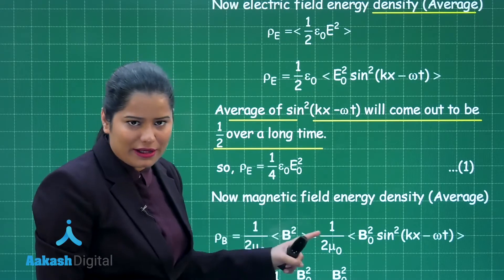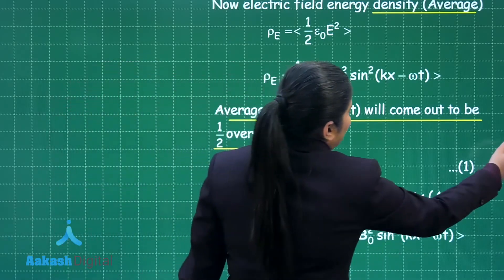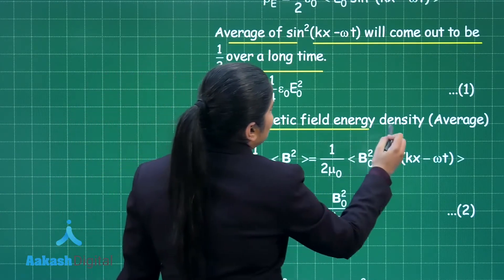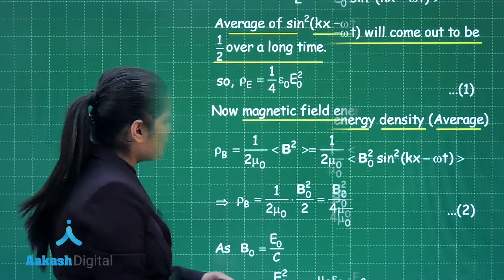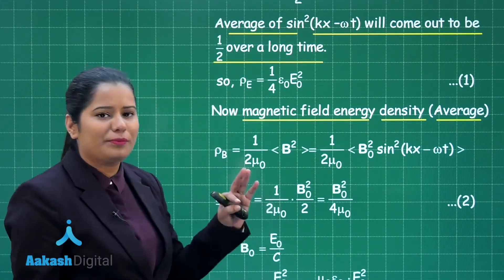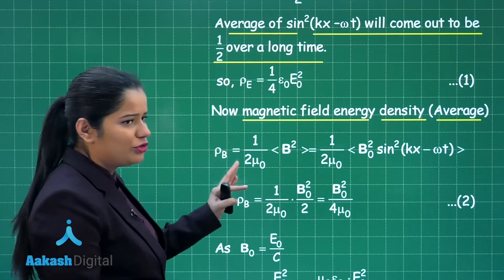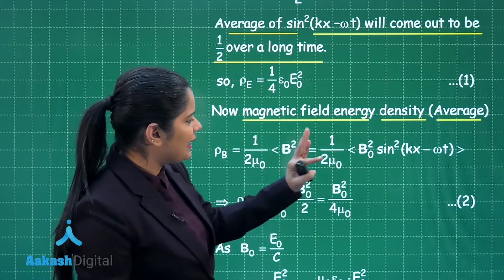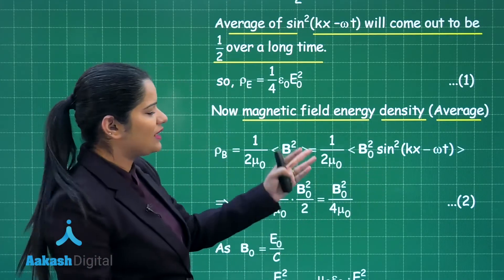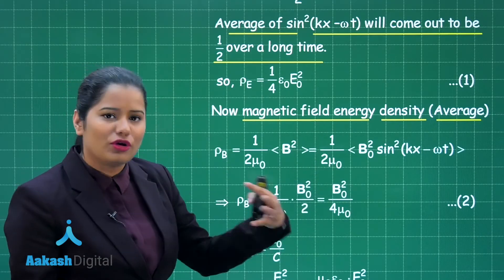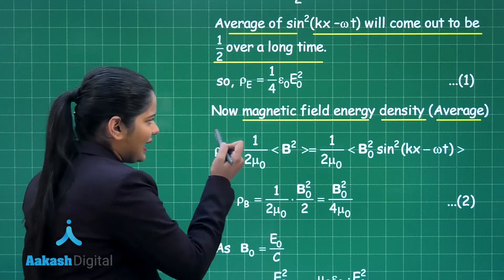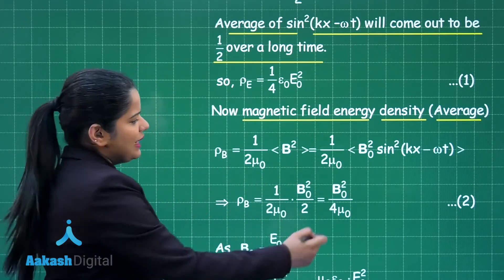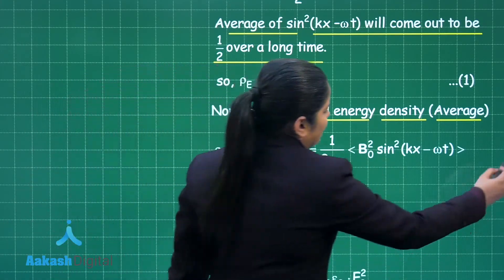Similarly, for the magnetic field, the average energy density is given by 1 over 2 mu-naught times the average of B-squared. Substituting the value of B and taking the average of sine squared (kx minus omega t), which again comes out to be one-half over a long time, the average energy density of the magnetic field is B-naught squared divided by 4 mu-naught — mark this as equation 2.